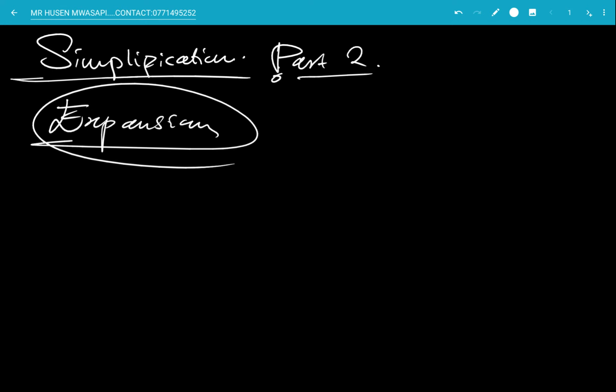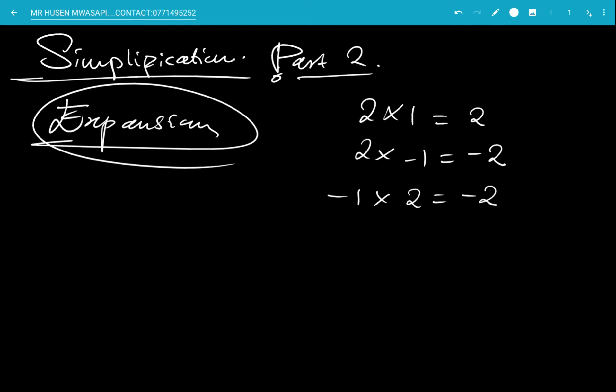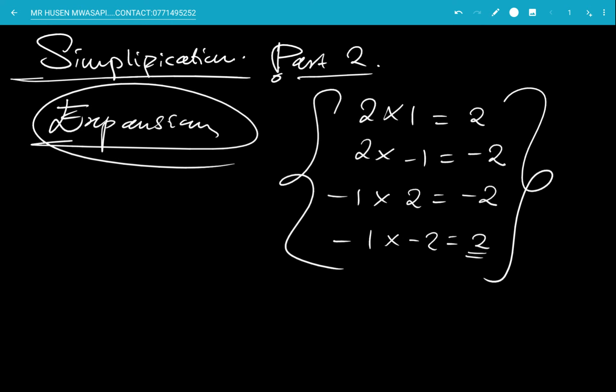When it comes to multiplication: 2 times 1 is 2; 2 times negative 1 is negative 2; negative 1 times 2 is still negative 2; but negative 1 times negative 2 is positive 2. Your answer will always be negative if and only if there is exactly one negative in the multiplication.